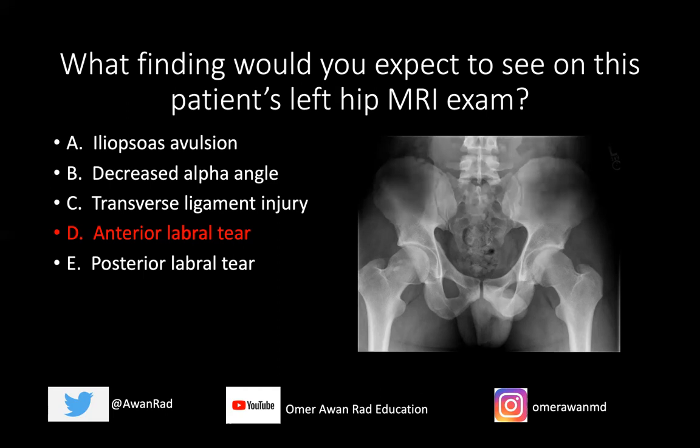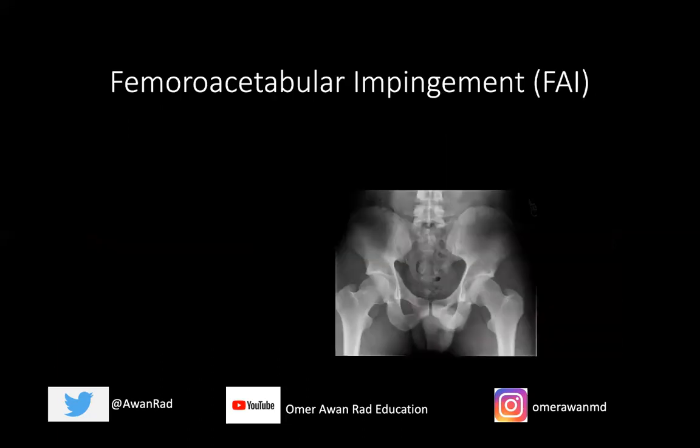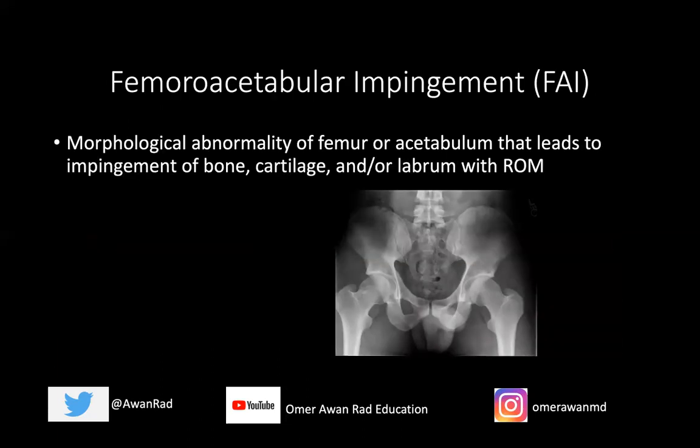Femoral acetabular impingement is a morphological abnormality of the femur or the acetabulum that can lead to impingement of bone, cartilage, and labrum during range of motion. Depending on whether you're abducting, internally rotating, or externally rotating your hip, you can get this type of impingement. There are two types of FAI: the CAM type and the pincer type.